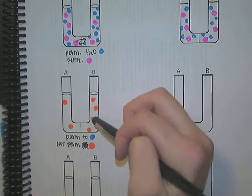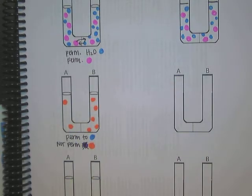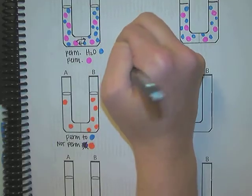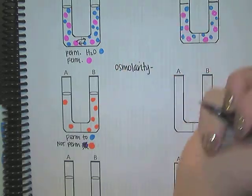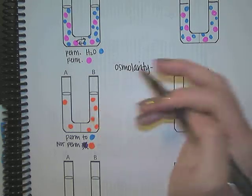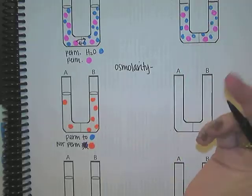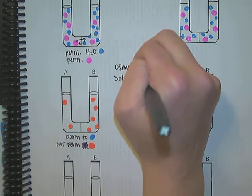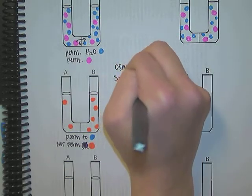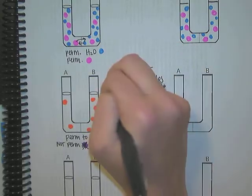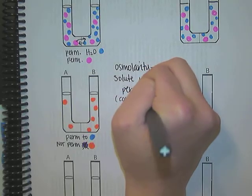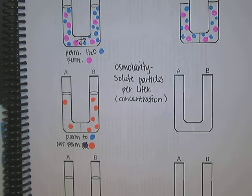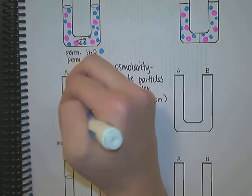So my right side is going to be hypertonic to my left side. Osmolarity is the sum of solute particles per liter of water — it's basically how concentrated something is. So the osmolarity on the right is higher, and if we just fill in the space with my blue dots — my water — we can visualize both sides.